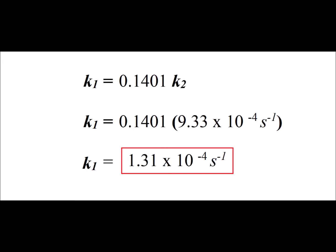We go back to use our relationship between k1 and k2 that we got from the equilibrium constant, that k1 is equal to 0.1401 times k2. We've derived k2 already, that's 9.33 times 10 to the minus 4 inverse seconds. So multiplying this out we get that k1 is equal to 1.31 times 10 to the minus 4 inverse seconds.